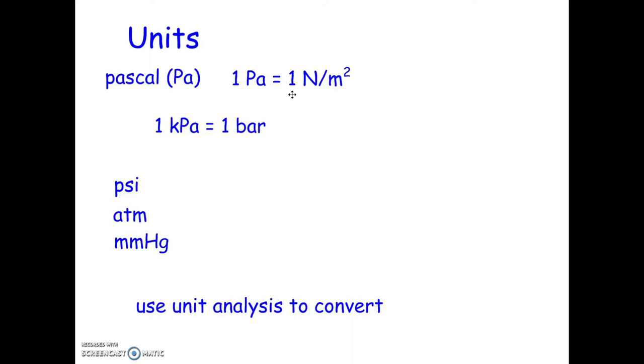Now that's really small, so we tend to use kilopascals more often, and 1 kilopascal is equal to 1 bar. We can also use units like PSI, pounds per square inch, atmospheres, ATM, or mmHg, which is millimeters of mercury or inches of mercury, INHg. All of these have conversion factors given to you on page 462 of your textbook, and you can use unit analysis to convert from one to the other.